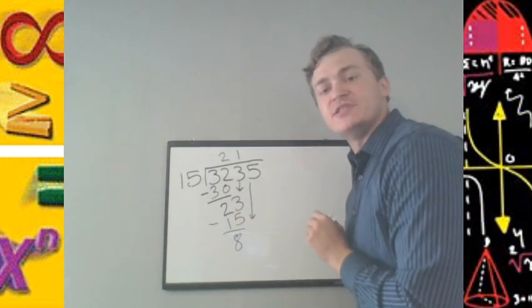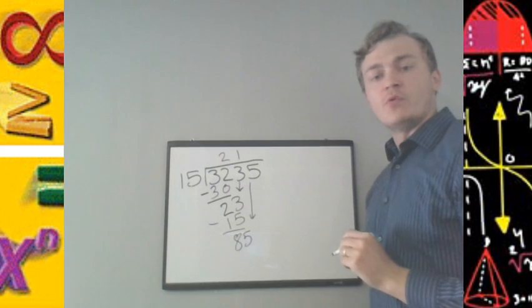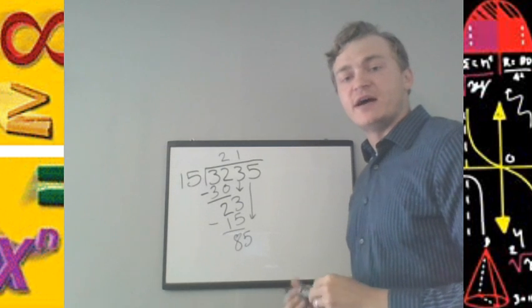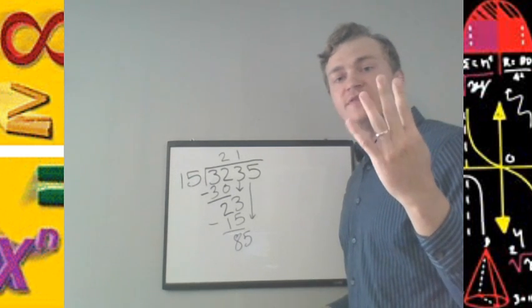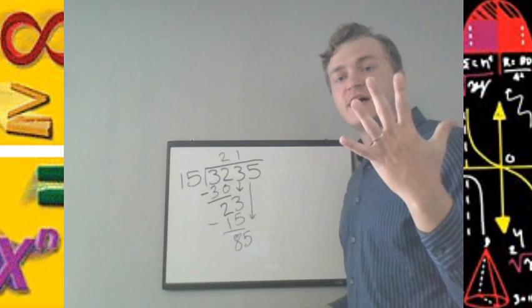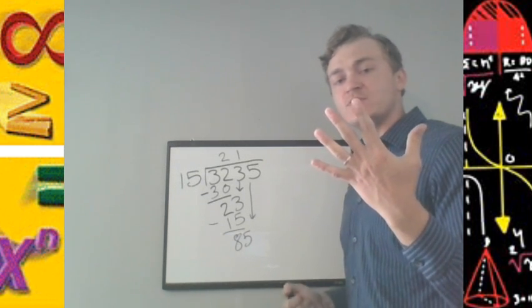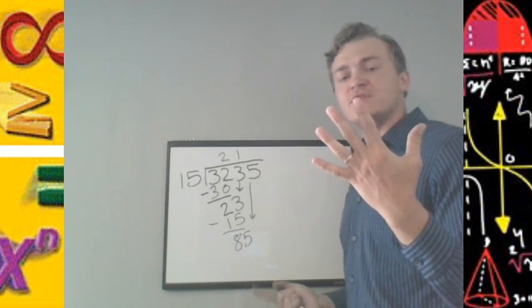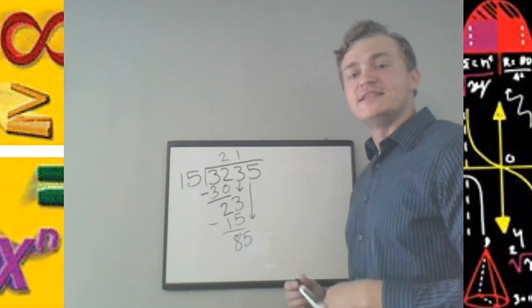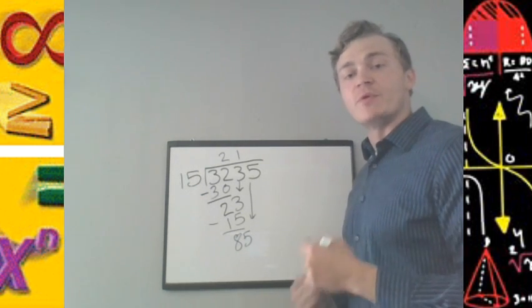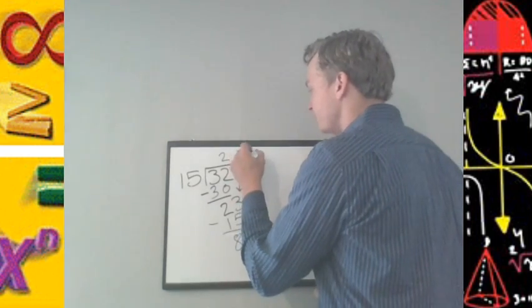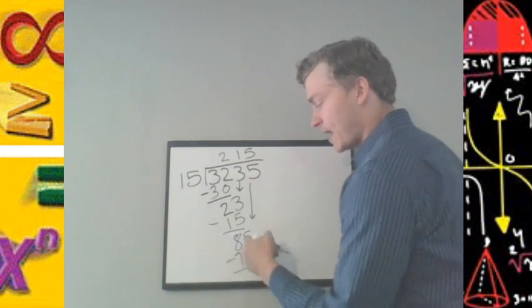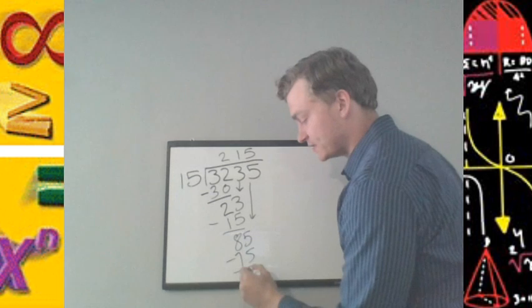Bringing down the next digit, 5. We want to know 85 divided by 15. How many times will 15 divide 85? 15, 30, 45, 60, 75. Can't go any higher. The next one would be 90. That's over 85, so we'll stop at the 75. 15 divides 85 five times with a remainder of 10, as we will see. 15 times 5 is 75. 85 minus 75 is 10.